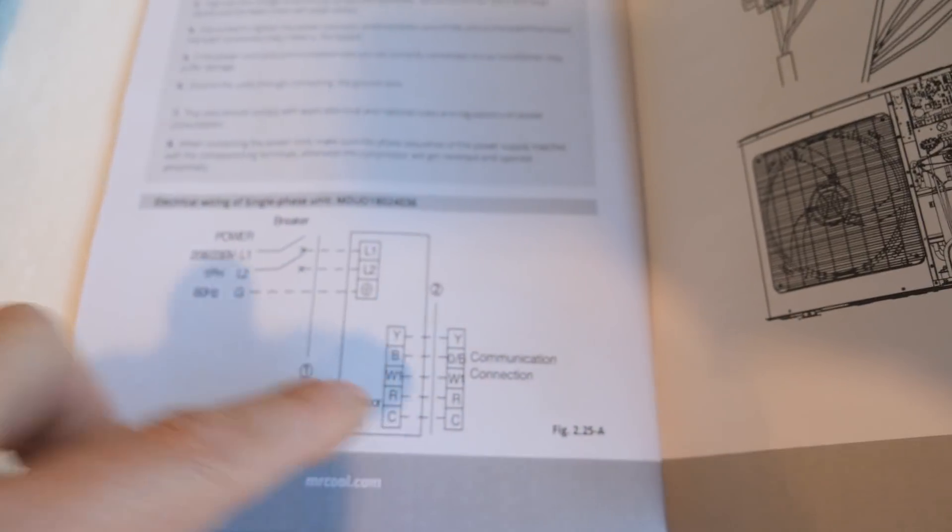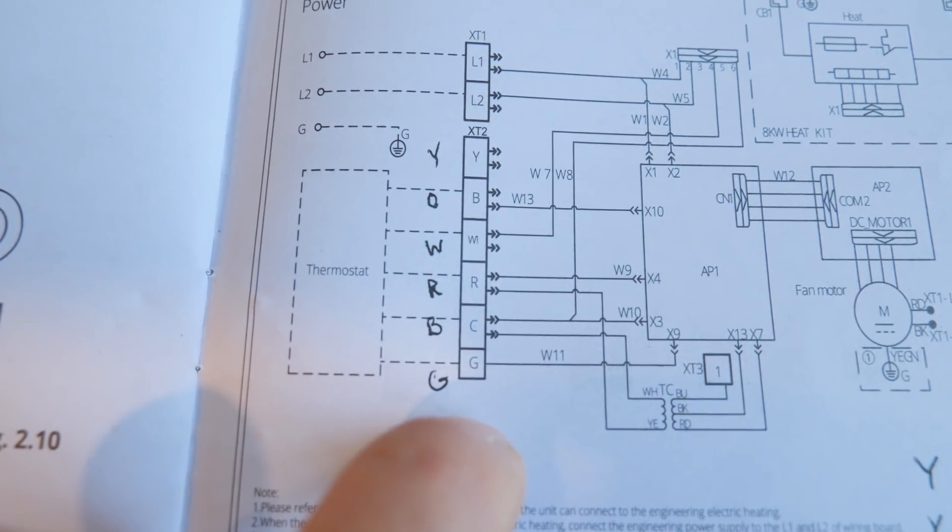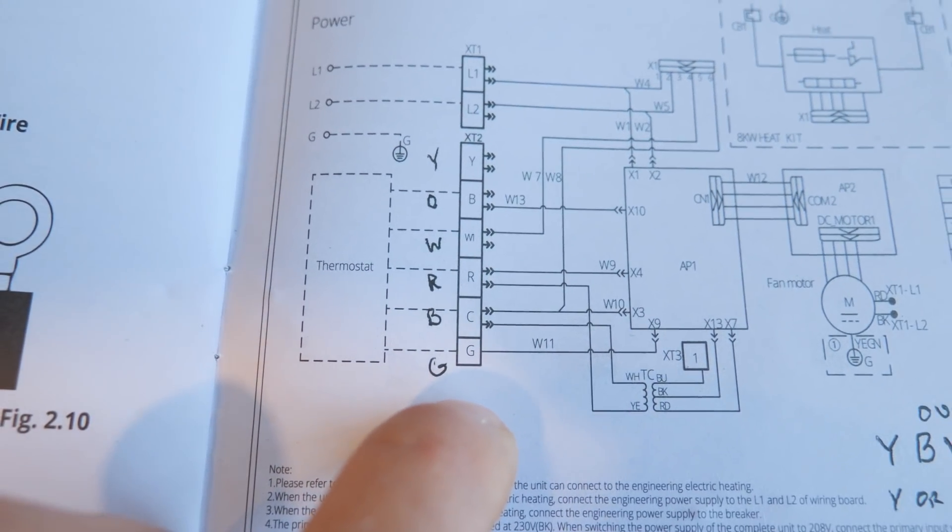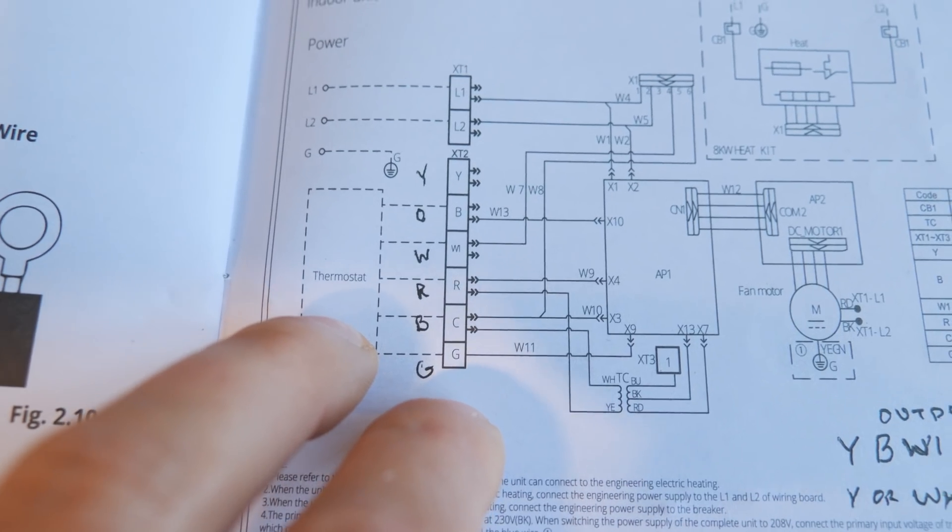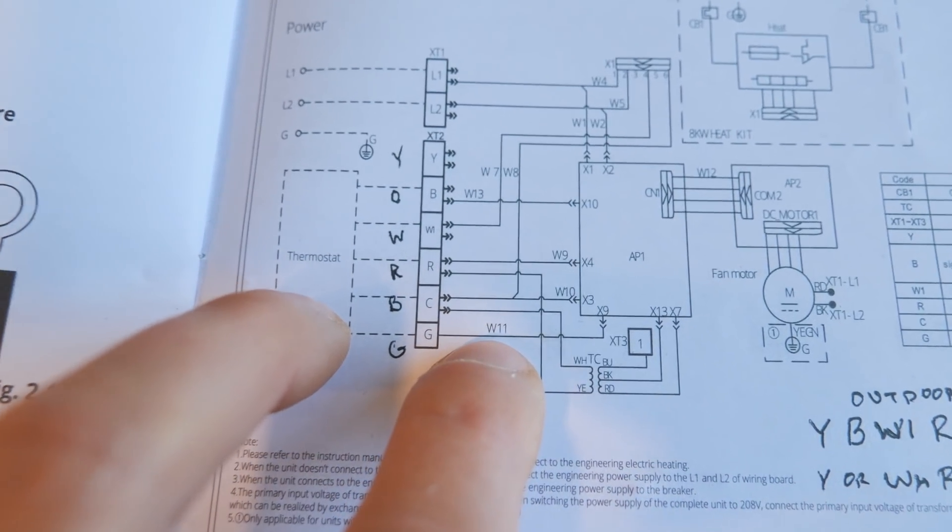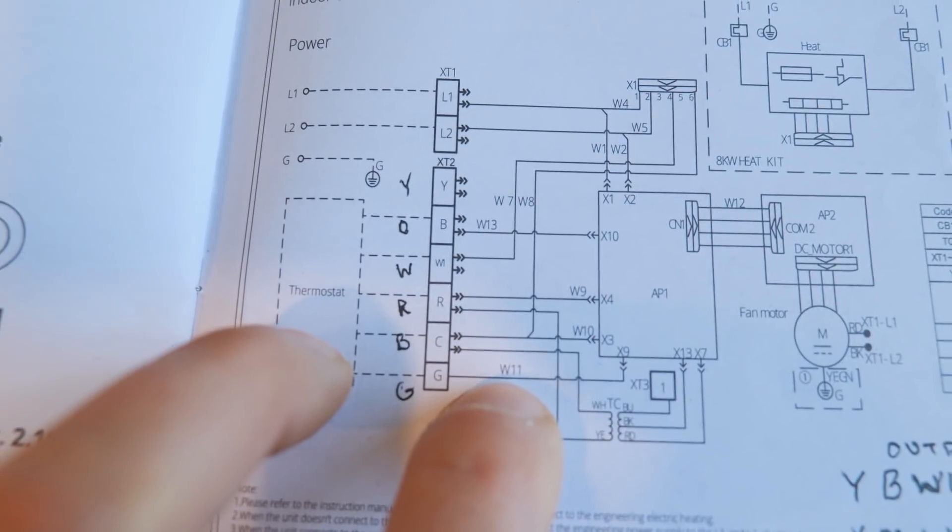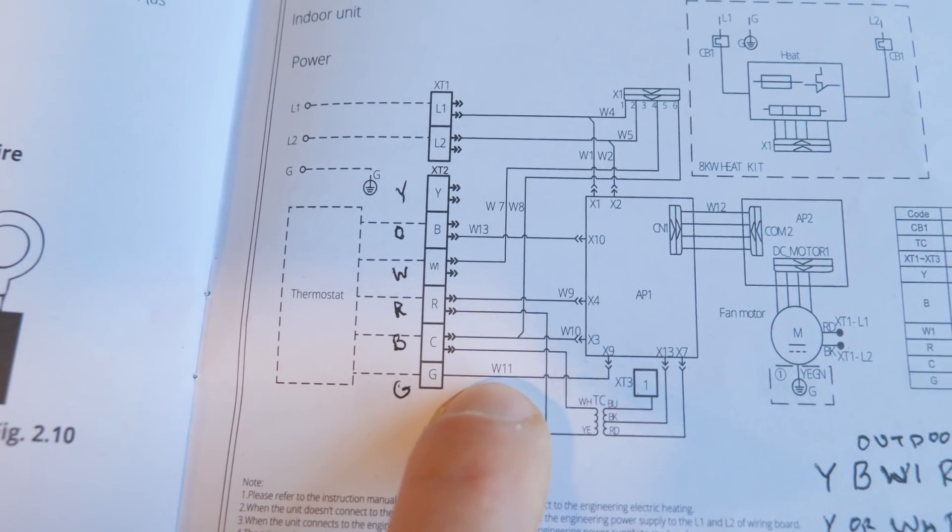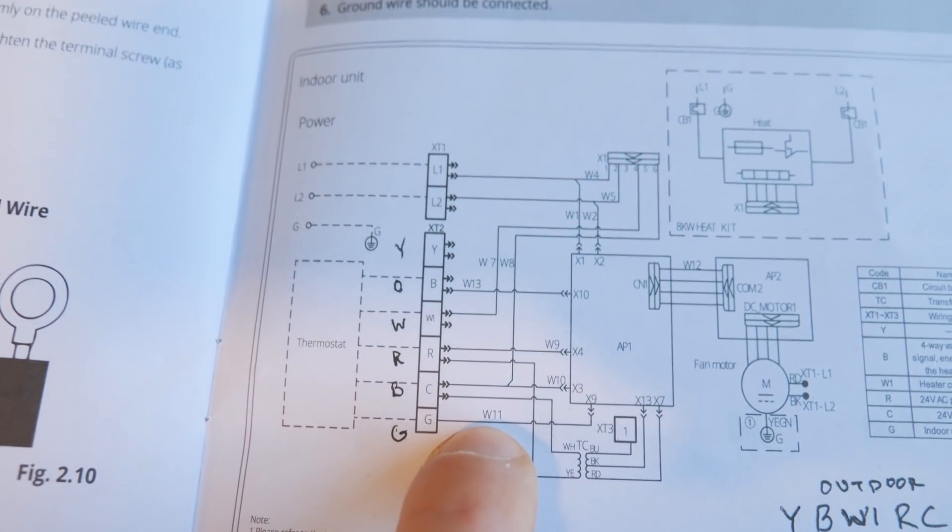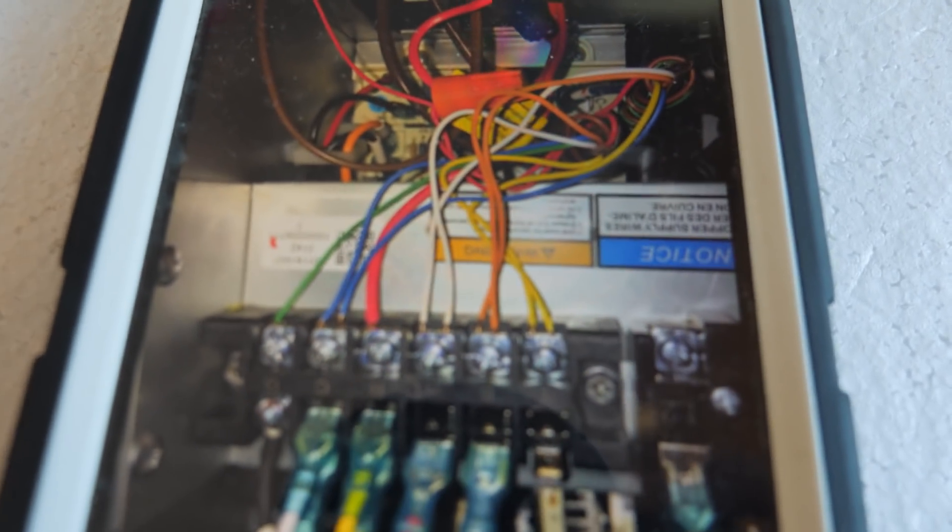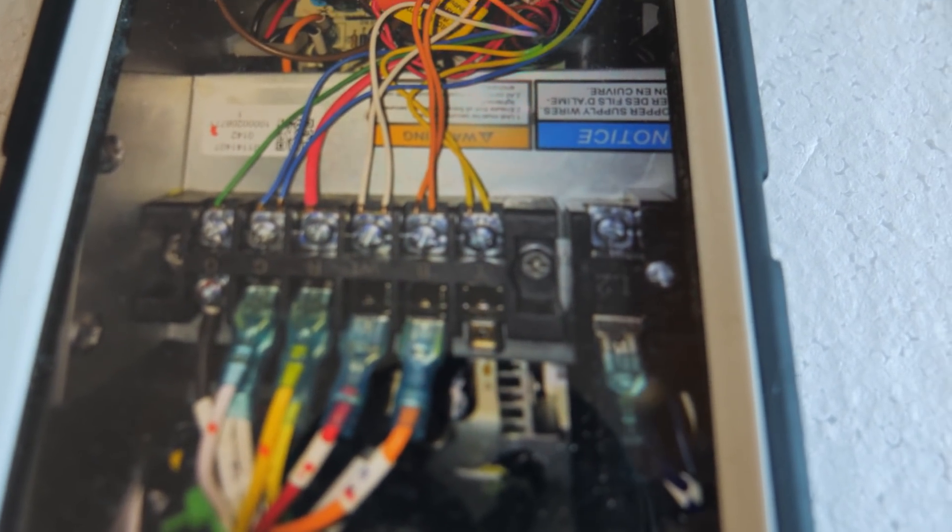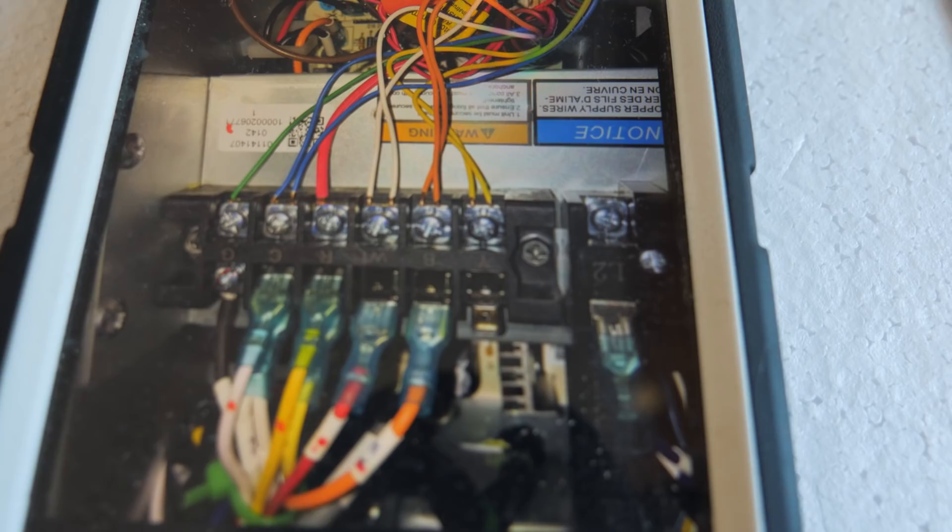On the indoor unit, this is the Mr. Cool Universal wiring. Yours will be different. So the thermostat wire to the indoor unit terminal, this is the wiring diagram. Now, what I did was take a picture of the actual wiring terminal on both the outdoor unit and the indoor unit. So you can see there, Y is yellow, B is orange, W1 is white, R is red, C is blue,